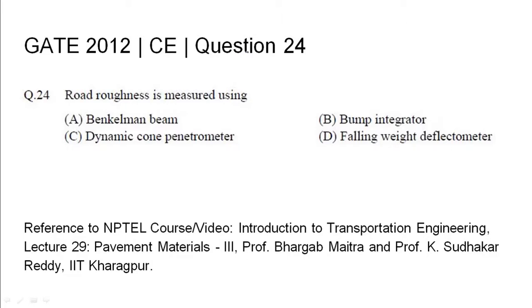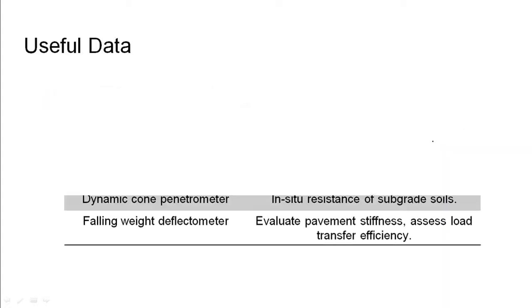GATE 2012 Civil Engineering question 24: Road roughness is measured using — the four options given are: A) Benkelman beam, B) bump integrator, C) dynamic cone penetrometer, and D) falling weight deflectometer. The relevant NPT reference has been listed.